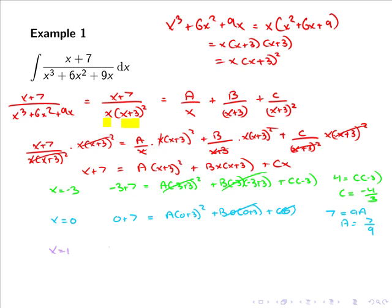So if x equals 1, we have 1 plus 7 equals a, which is 7 over 9, by 1 plus 3 squared, plus b times 1 by 1 plus 3, plus c, which is minus 4 over 3, all multiplied by 1. Tidying this up, we have 8 equals 7 over 9 by 16 plus 4b minus 4 over 3. So if we tidy this up, we have 4b equals minus 52 over 9, or simply b equals minus 13 over 9.